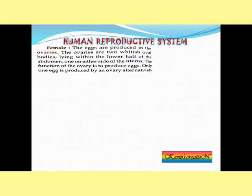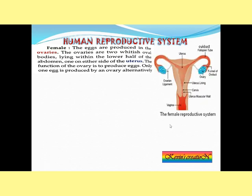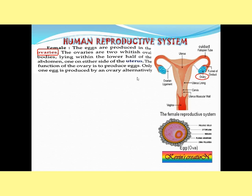Now let us learn the human reproductive system, starting with the female. The eggs — female gametes — are produced in the ovaries. The ovaries are two whitish oval bodies lying within the lower half of the abdomen, one on either side of the uterus. Their function is to produce eggs. Only one egg is produced by an ovary, alternately, every month.